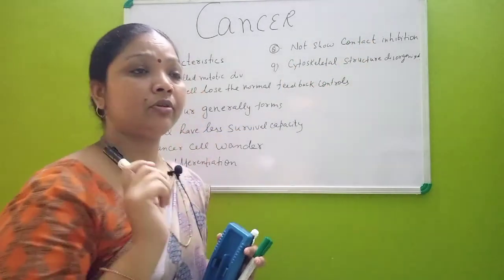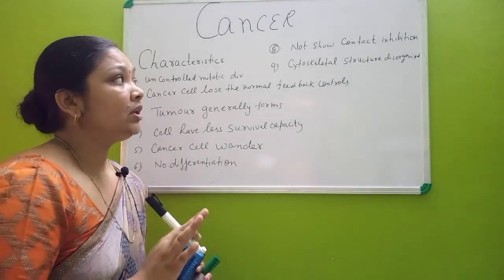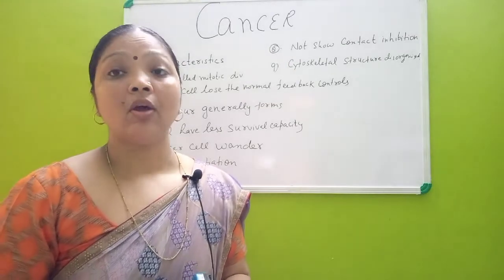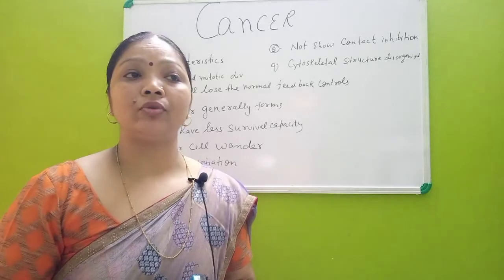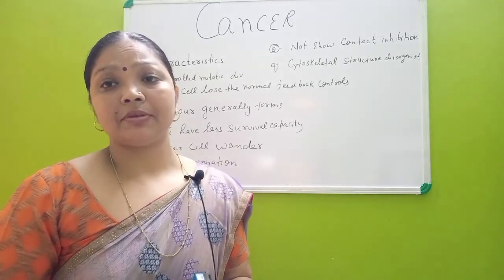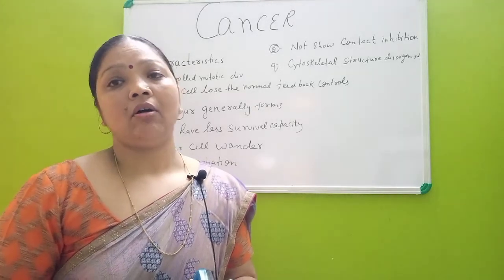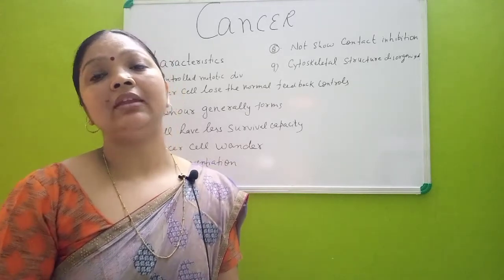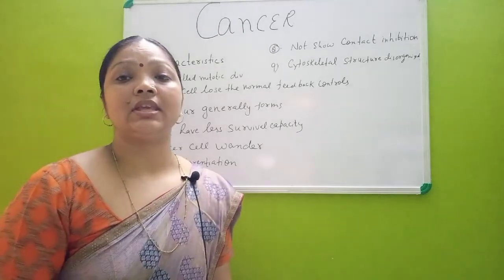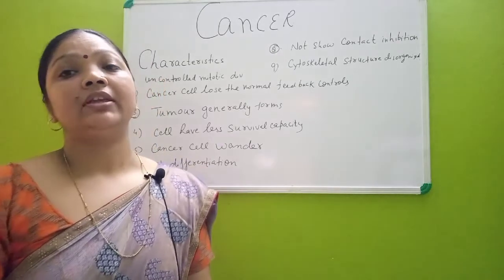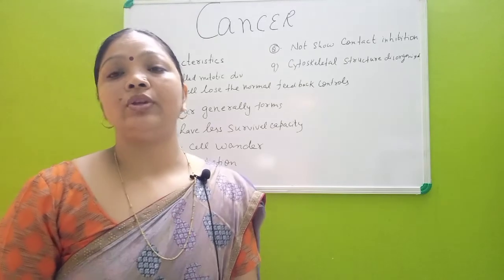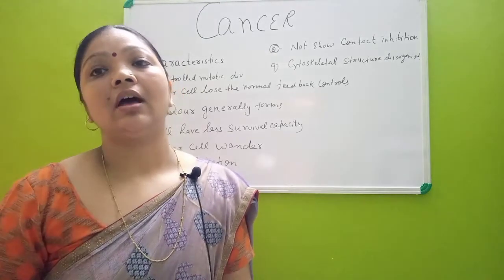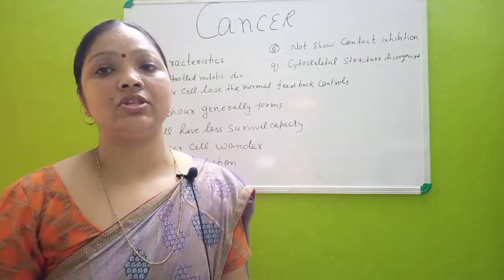Contact inhibition is the most important characteristic of cancer cells. Additionally, the cytoskeletal structures present in cells — microtubules and microfilaments — also get disordered and do not perform their proper functions, as there is no proper control on cell division. These are the main characteristics of cancerous cells. Next, we will deal with how cancer is caused and what the causative agents of cancer are.